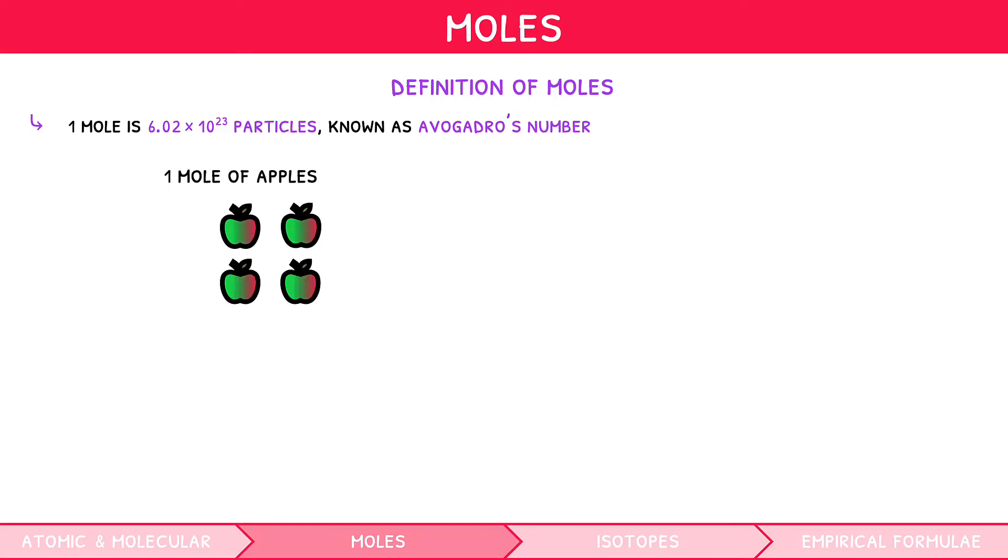In chemistry, substances are often measured in moles, which is just a complicated way to say a number. Just like a million is equal to 1 followed by six zeros, one mole is equal to 6.02 times 10 to the power of 23. This is known as Avogadro's number. The important concept to get your head around is that moles are simply just numbers. If you have 1 mole of apples, you will have 6.02 times 10 to the power of 23 apples. If you have 1 mole of oxygen, you would have 6.02 times 10 to the power of 23 molecules of oxygen.